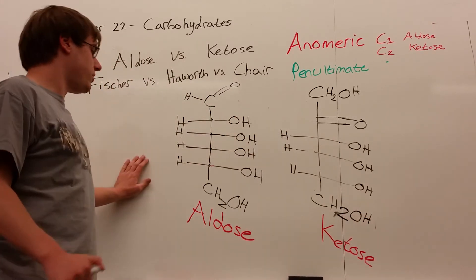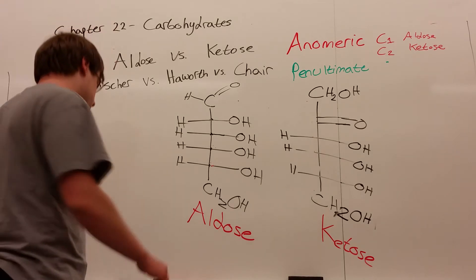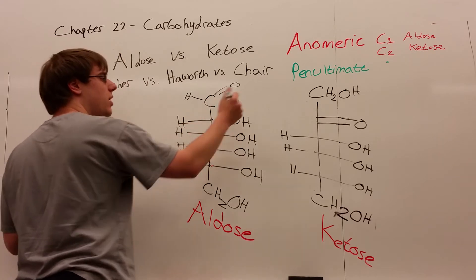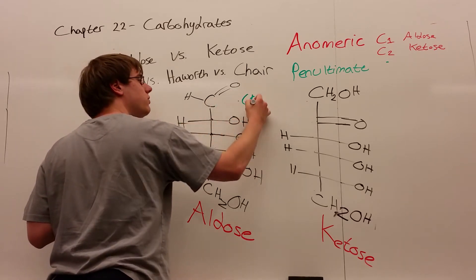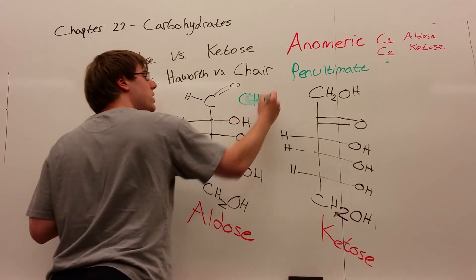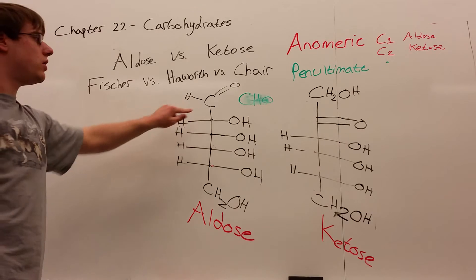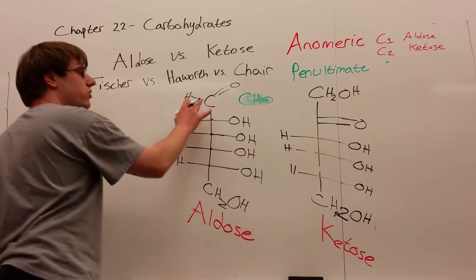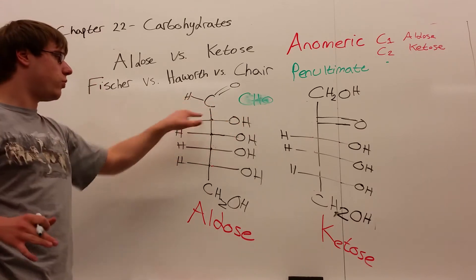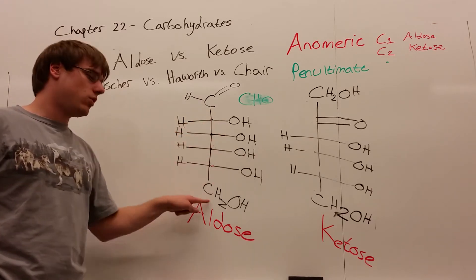Let's look at the aldose first, because typically you're going to be working with aldoses more than ketoses. An aldose will typically show CHO at the very top — that CHO represents an aldehyde. Then you have several carbons each with one hydrogen and one OH on them, and at the very bottom you'll see CH2OH.